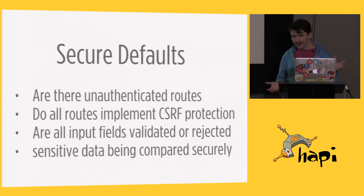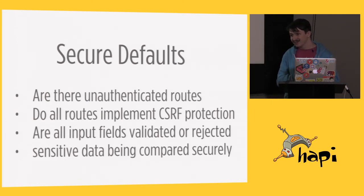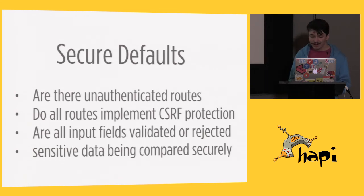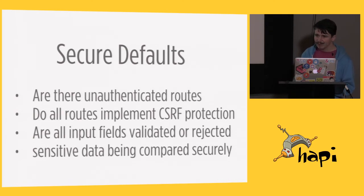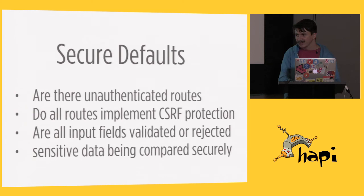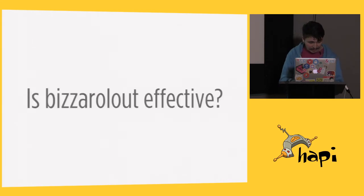So, secure defaults — this is what I have right now. These components were working at some point, but now they're kind of disconnected and I've got to link them back together, so unfortunately I won't be able to have a demo. Are there unauthenticated routes? You just check the route handler, see if there's a no-auth set. Do all the routes have CSRF protection on them? Are the input fields validated or rejected? Do you allow unvalidated input fields? Do you have empty validate handlers in your routes? And is there sensitive data being compared insecurely? I can check that with some simple static analysis.